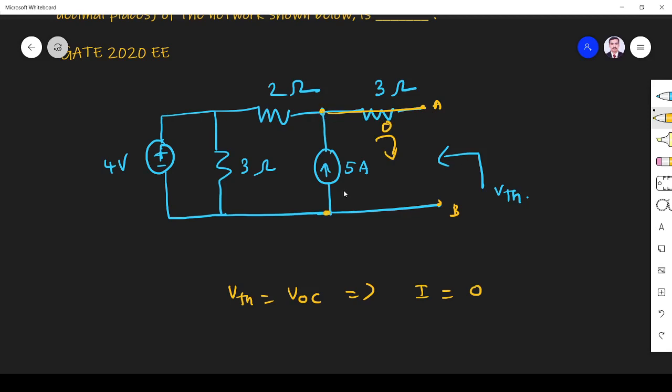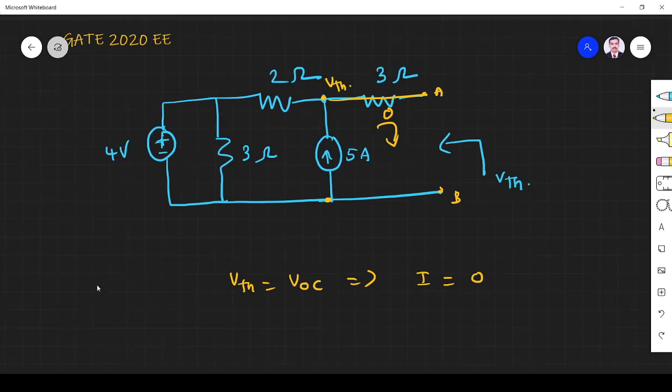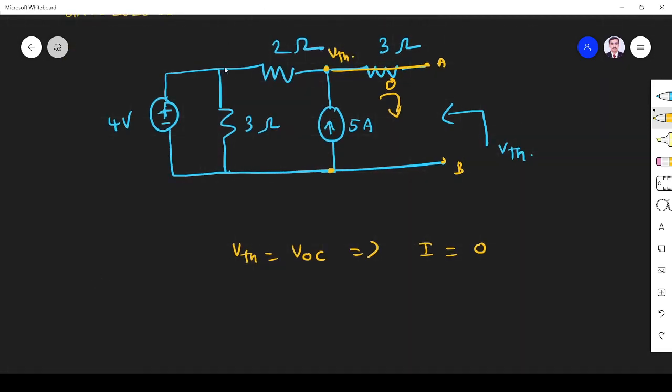This is V-Thevenin. Now I apply KCL nodal analysis. So for this branch, V-Thevenin minus four divided by two. At this node I write KCL, incoming current is five.